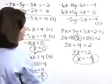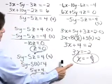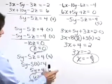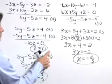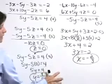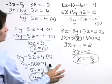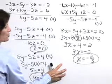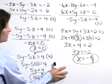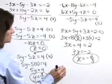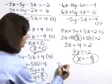We've solved for all three variables: x equals negative two thirds, y equals four fifths, and z equals zero. It's always a wise idea to go back and check these values in your original three equations. If you do that, you will find that the check does indeed verify our solution set.